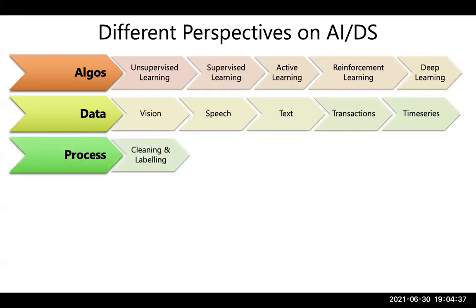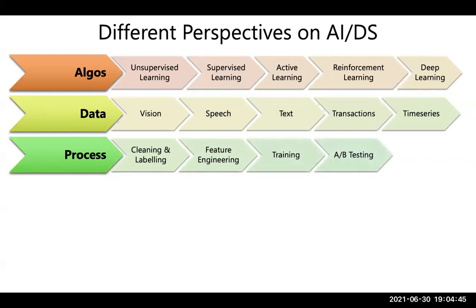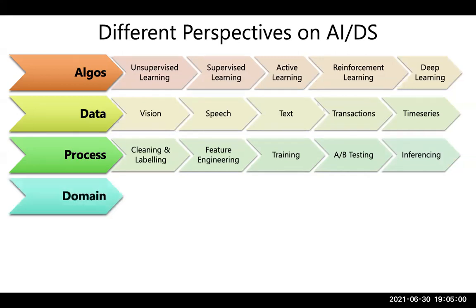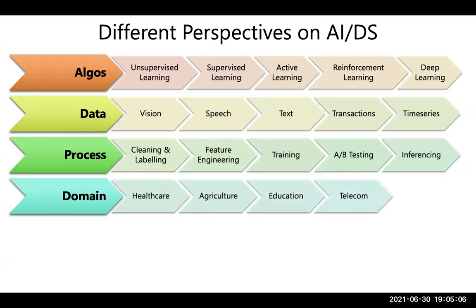There's also a process perspective — how do we clean and label data, do feature engineering, train models, perform A/B testing, deploy, and do inferencing. And then there is a vertical or domain perspective, covering different applications of AI across various domains. These are all different frameworks through which we can learn AI.